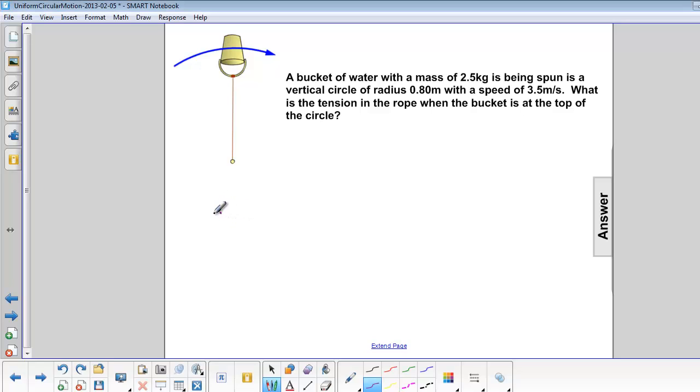First we can draw a free body diagram. Mg is down, and the force of tension is also down. The acceleration is down since the centripetal acceleration is always towards the center.